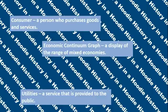Before we start, let's go over some vocabulary for today's lesson. A consumer is a person who purchases goods and services. An economic continuum graph is a display of the range of mixed economies. Utilities are services that are provided to the public.